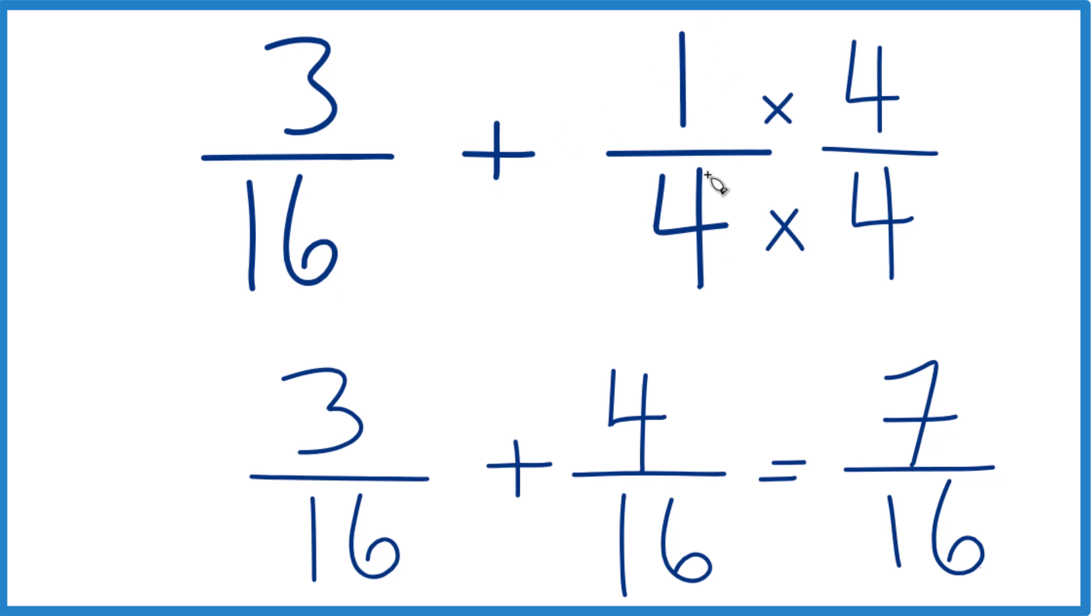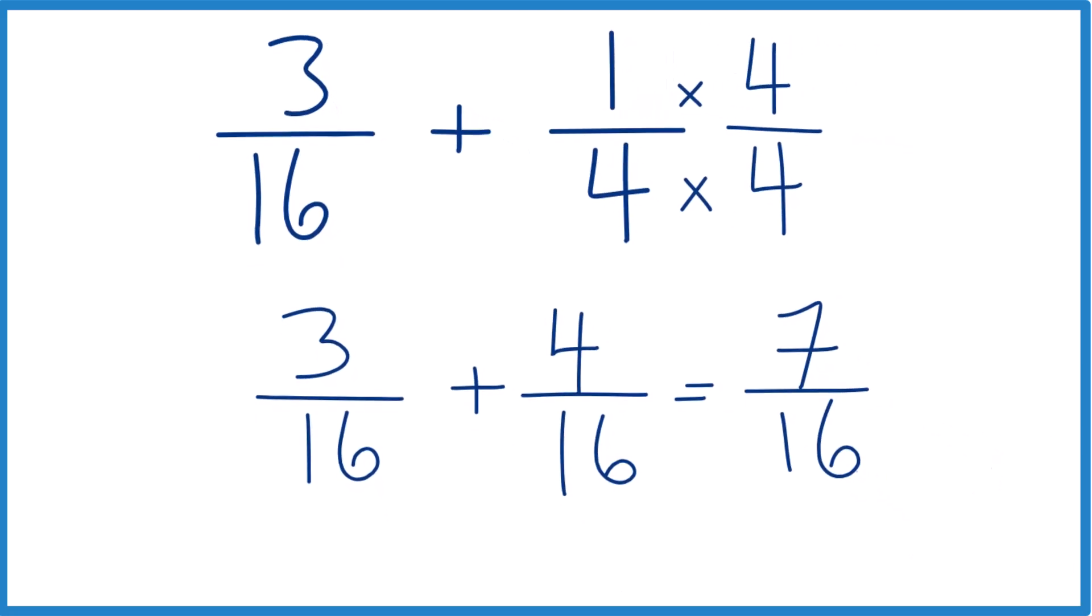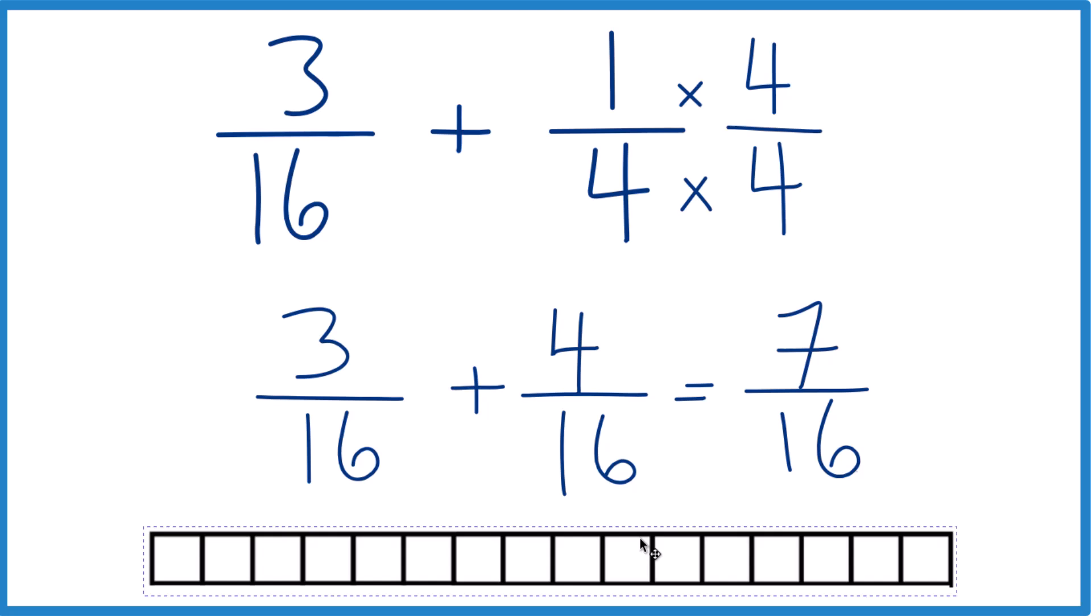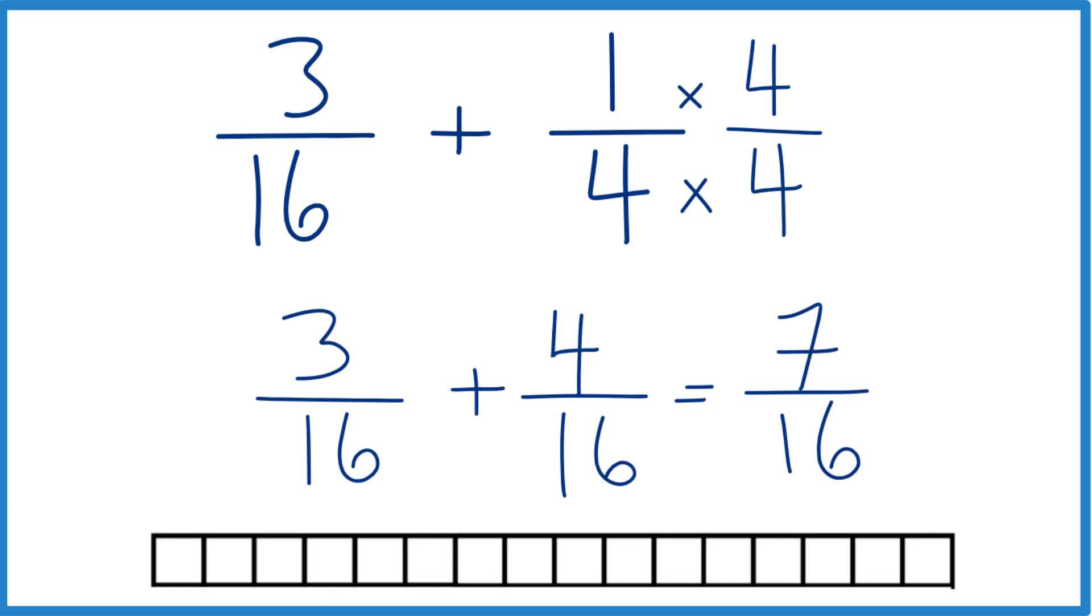So 3/16 plus 1/4 is 7/16. And if you think about a measurement here, you take your 3/16. So each one of these is 1/16. You take the 3/16. So we have 1, 2, there's 3/16.